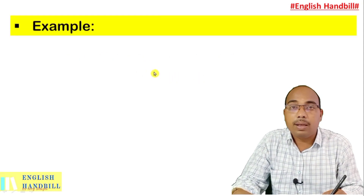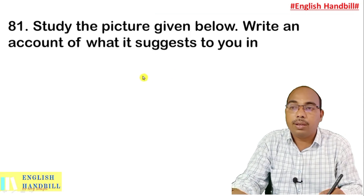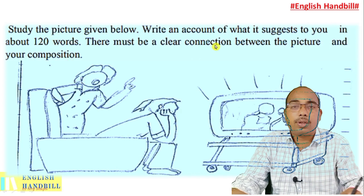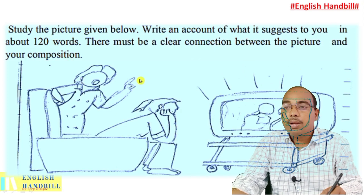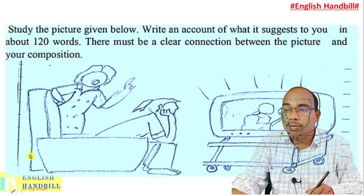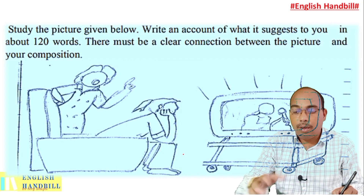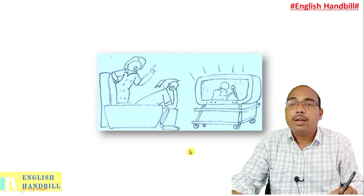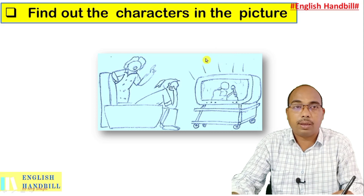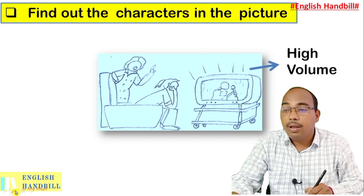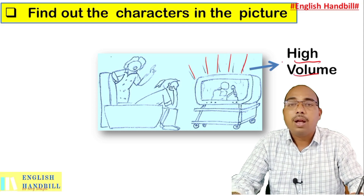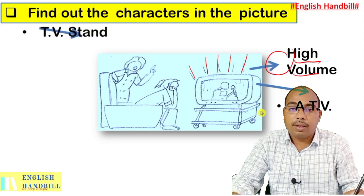Here is an example question. I will give you a picture. There is a lady and there is a TV. First, find out the characters in the picture. I observe high volume. What is high volume? I assume there is a TV, a sofa, and a TV stand.